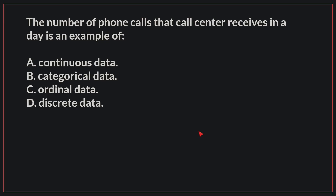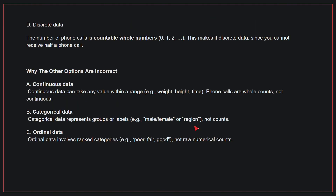The number of phone calls that a call center receives in a day is an example of... The correct answer is D: Discrete data. The number of phone calls is countable whole numbers. This makes it discrete data, since you cannot receive half a phone call.